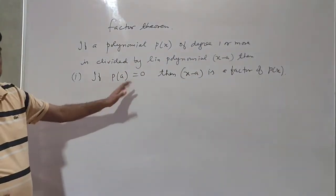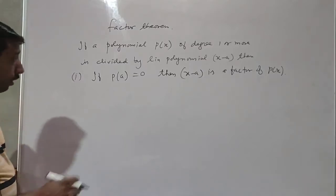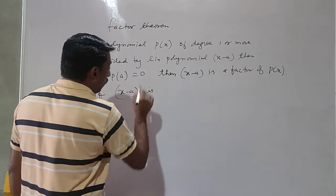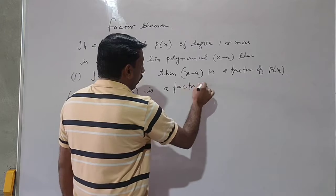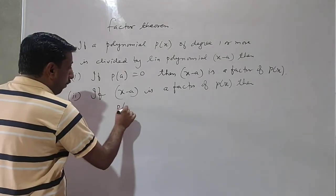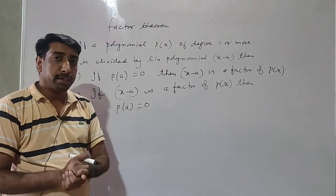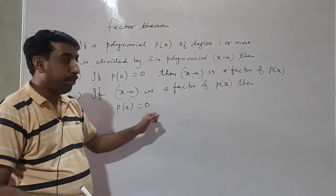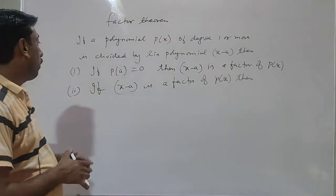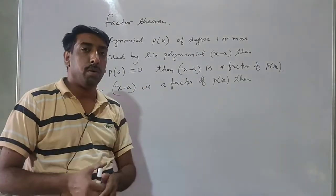If the remainder is zero, then the polynomial which divides another polynomial is the factor of the dividend. Second condition: if x minus a is already a factor of P(x), then P(a) will be equal to zero. If a polynomial is a factor of another polynomial, then the remainder must be equal to zero, so P(a) will be equal to zero.